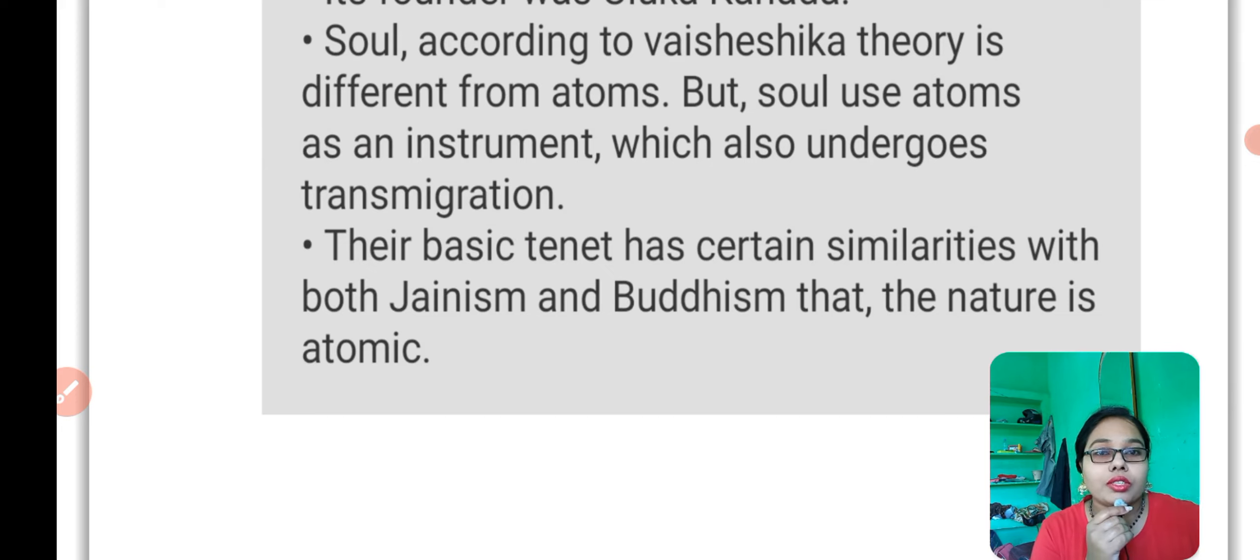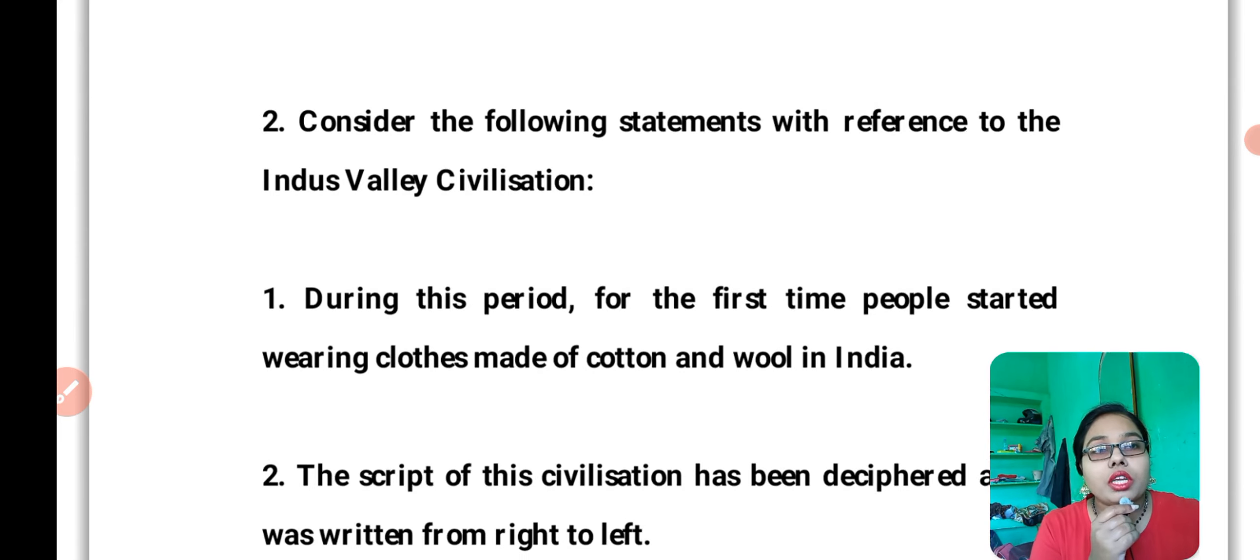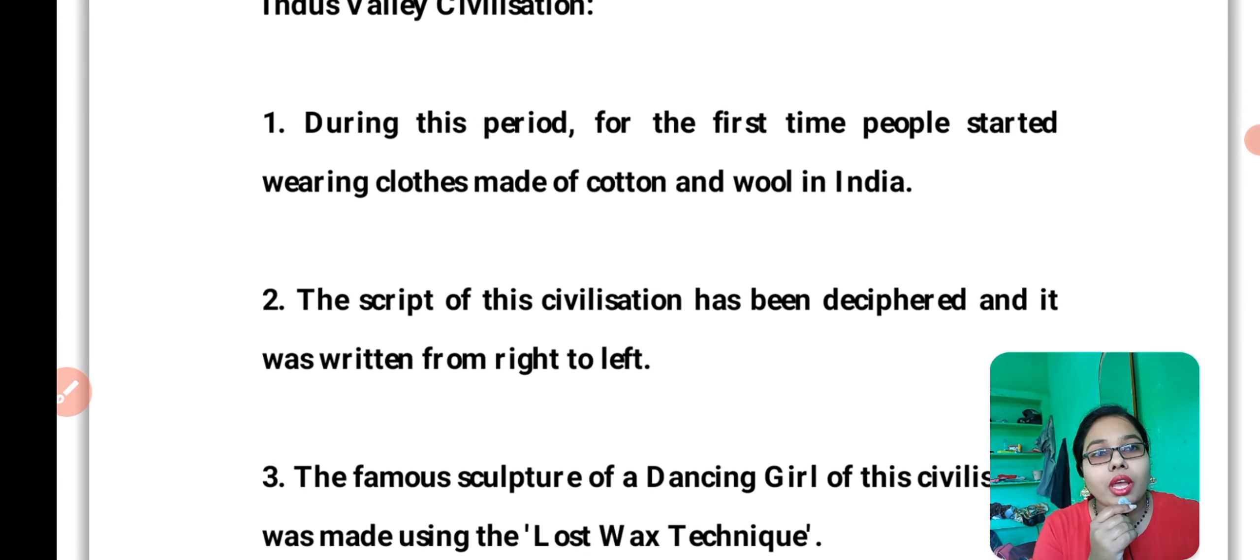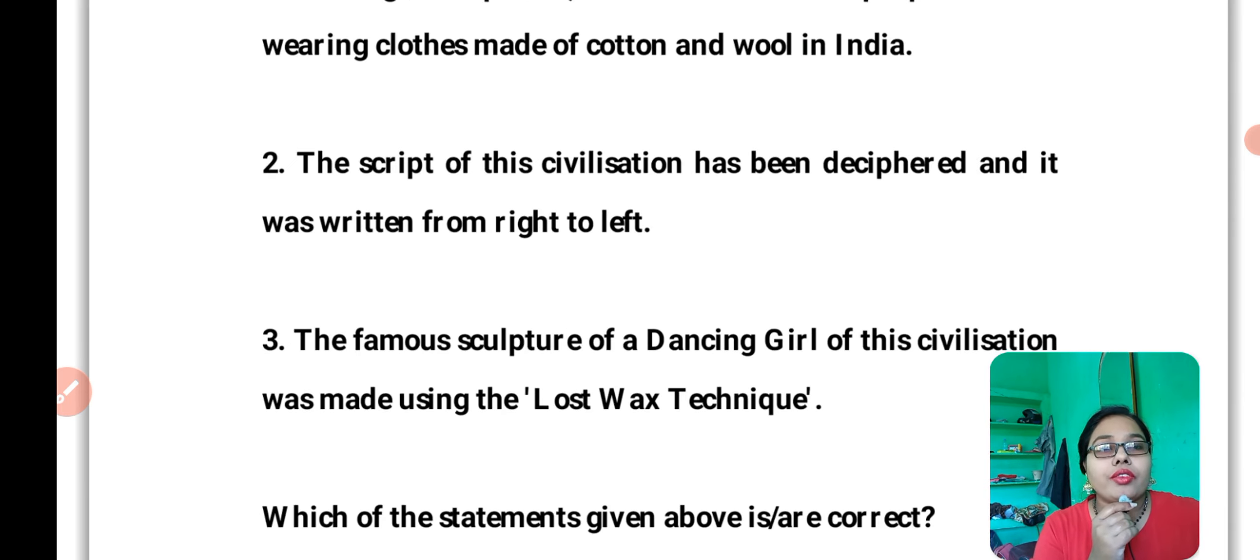Question number 2: Consider the following statements with reference to Indus Valley Civilization. During this period, for the first time people started wearing clothes made of cotton and wool in India. The script of this civilization has been deciphered and it was written from right to left.